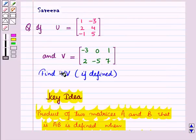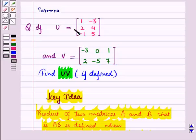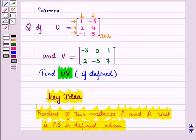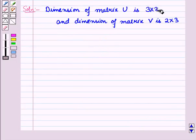Now let us start with the solution. We have to find product UV if defined. Matrix U has 3 rows and 2 columns, so the dimension of matrix U is 3×2. Matrix V has 2 rows and 3 columns, so the dimension of matrix V is 2×3. The number of columns of matrix U is equal to the number of rows of matrix V.